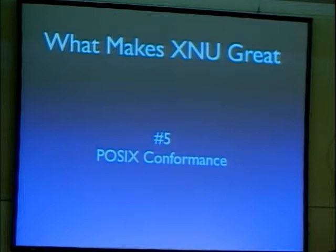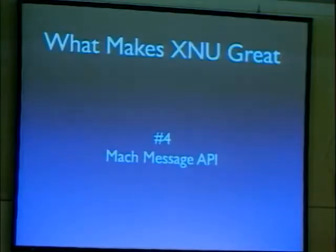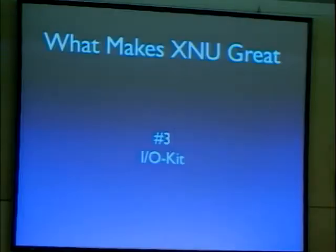Number 4 is the Mach message API. All Unix-like systems have standard Unix IPC mechanisms like sockets, signals, and shared memory, but none are as powerful as Mach messaging, which handles security, queuing, and if necessary even data conversion — and it's handled directly by the kernel, unlike CoreBone on Linux. Number 3 is the IOKit: a modern object-oriented driver infrastructure that supports inheritance, driver stacking (for example CD-ROM sits on top of IDE which sits on top of PCI), and supports automatic matching and loading.